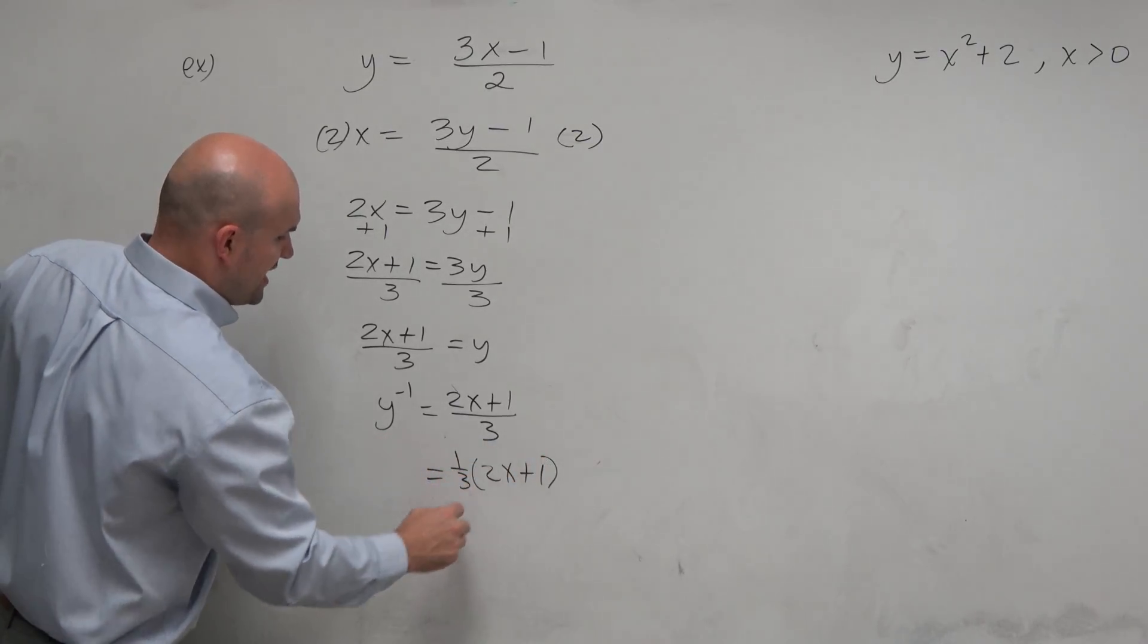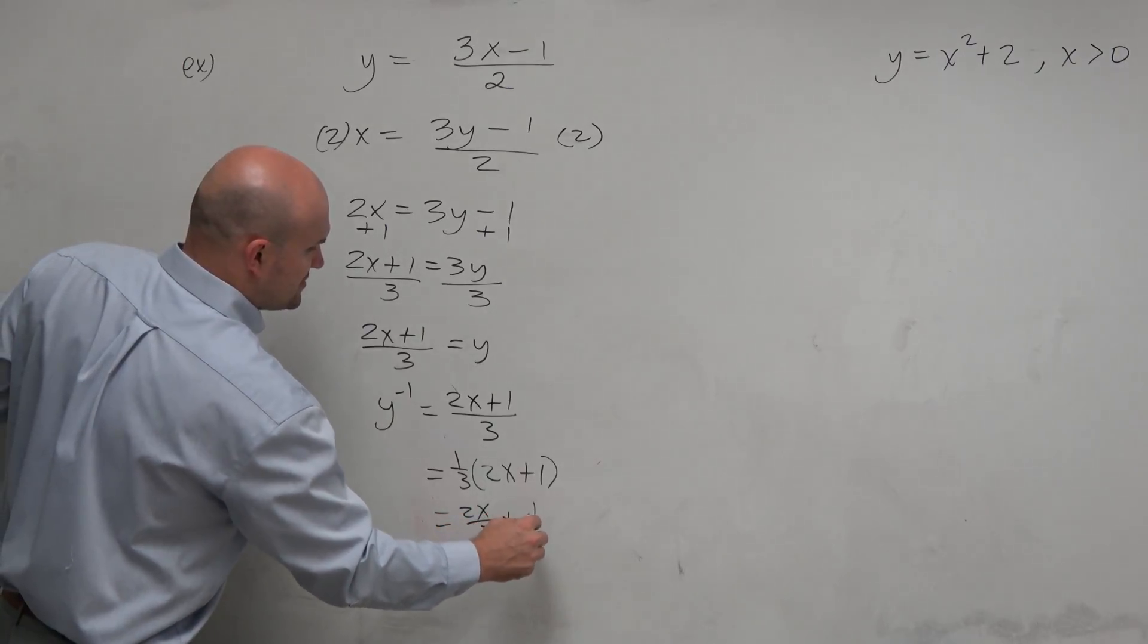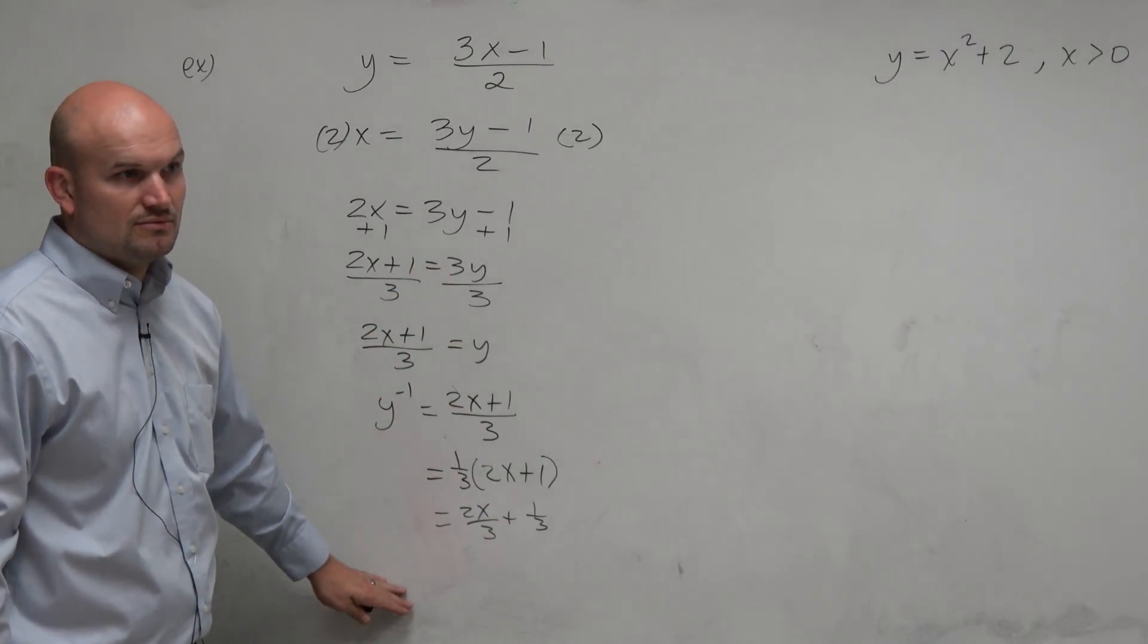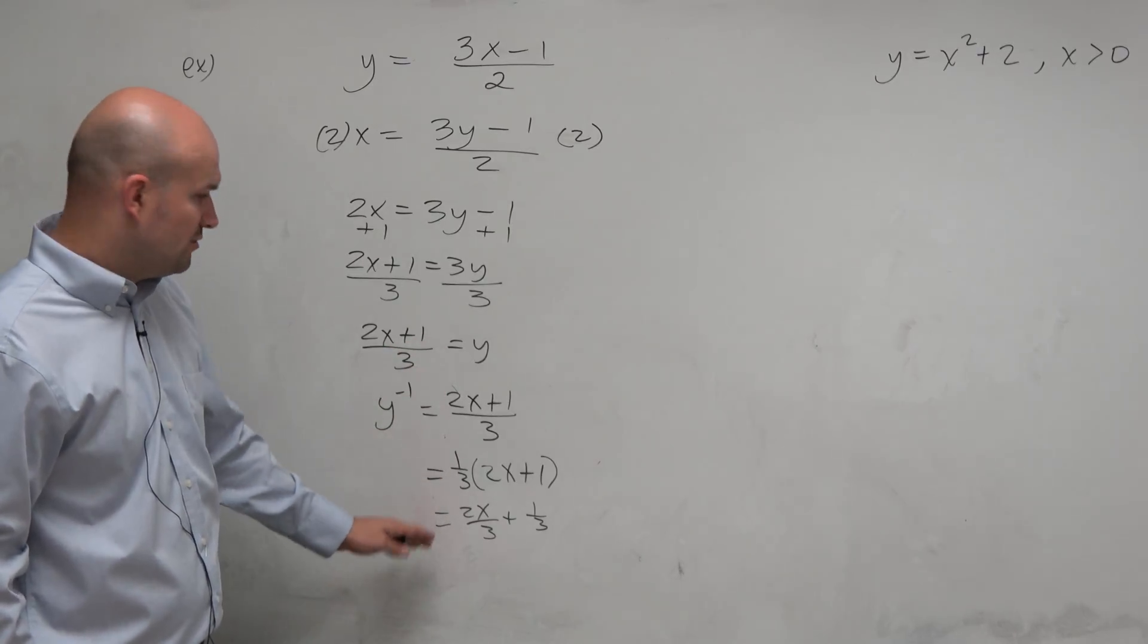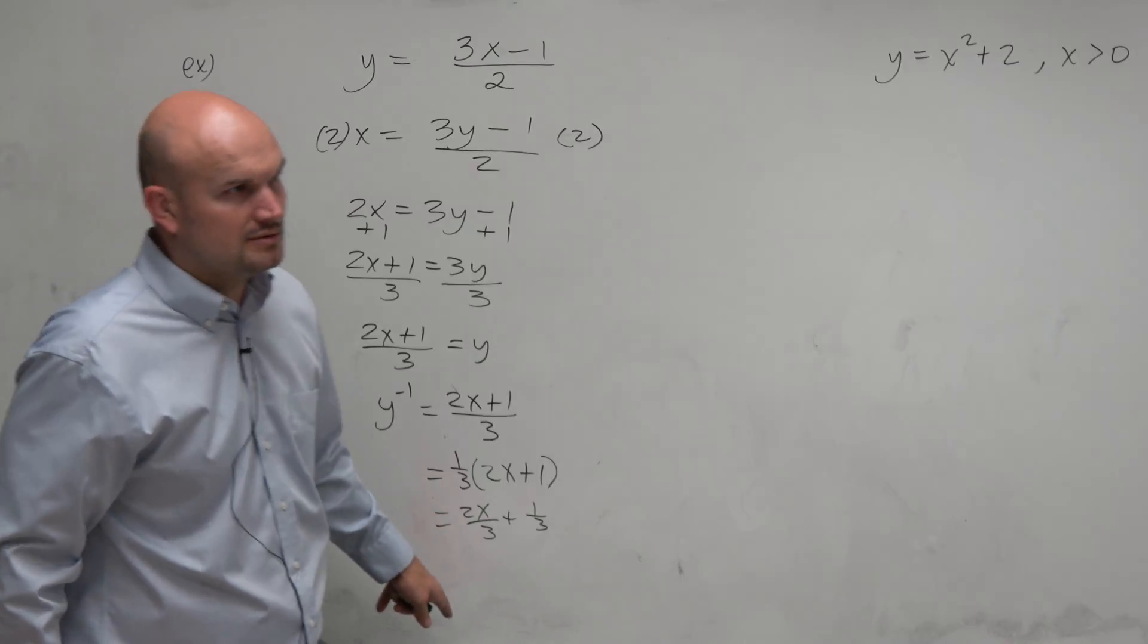Or you could distribute that. So it would be 2x thirds plus 1 third. I'm just showing you guys these three versions because who knows what version is on the test. I don't even know. I don't remember. Right? It could be any one of those. Don't get it wrong because you're looking for this and the answer is there. That's why I want to make sure.